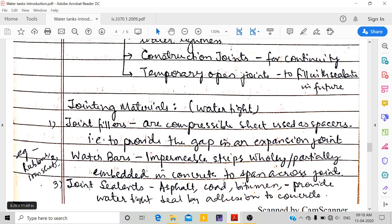The jointing material can be joint fillers, water bars, or joint sealants. Joint fillers are compressible sheets used as spacers to provide gap in expansion joints. Water bars are impermeable strips wholly or partially embedded in concrete to span across joints. Joint sealers can be asphalt, coal, or bitumen, and provide water tight seal by adhesion to concrete.